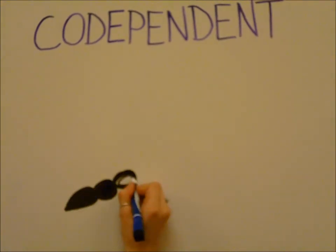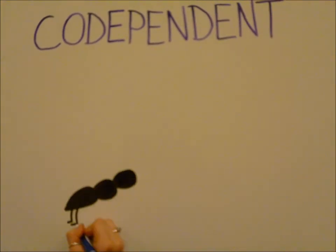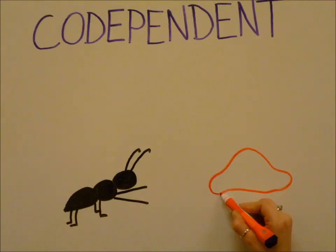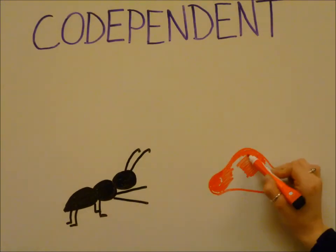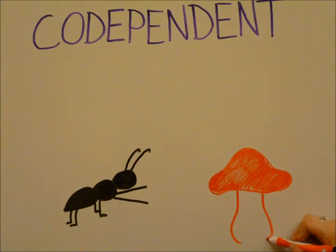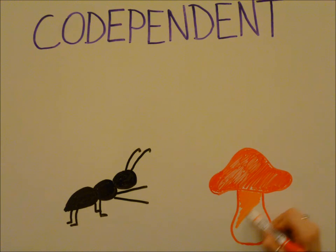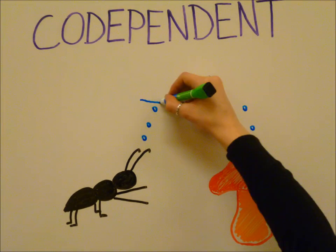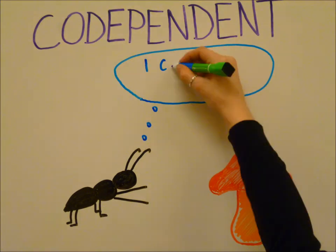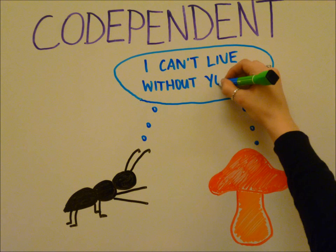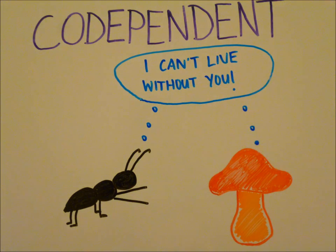The ants can't survive without the fungus, and the fungus can't survive without the ants. This is what we call a mutual codependency, or symbiotic relationship. The ants have lost their ability to digest cellulose in the leaves, and certain species of fungi have lost the ability to produce spores.